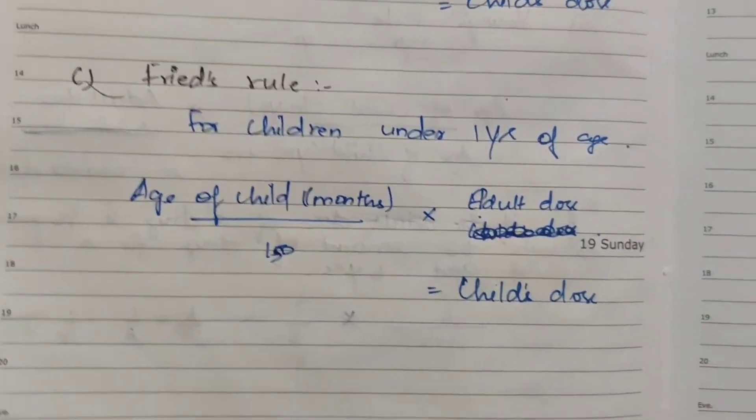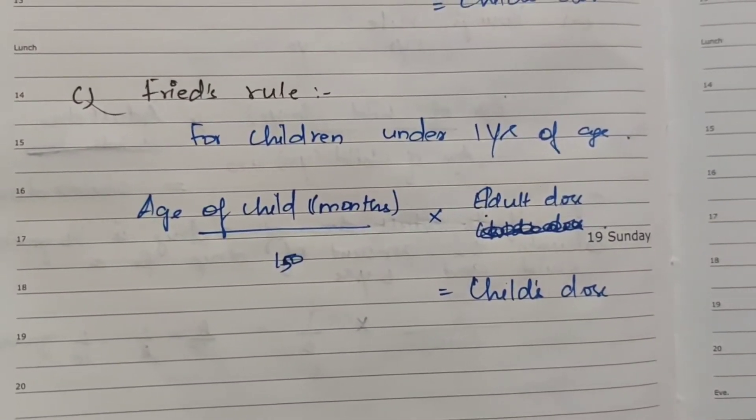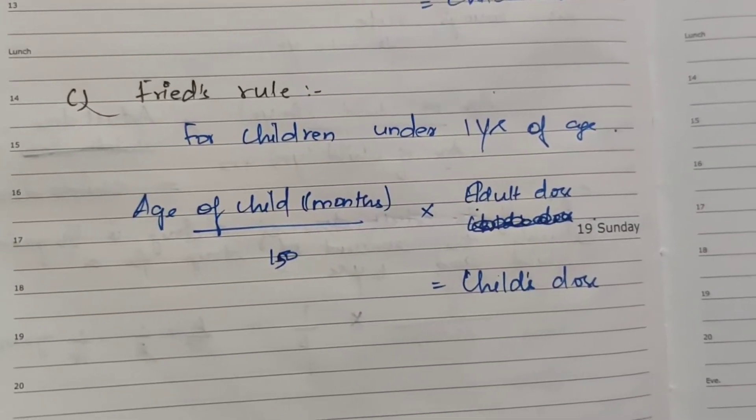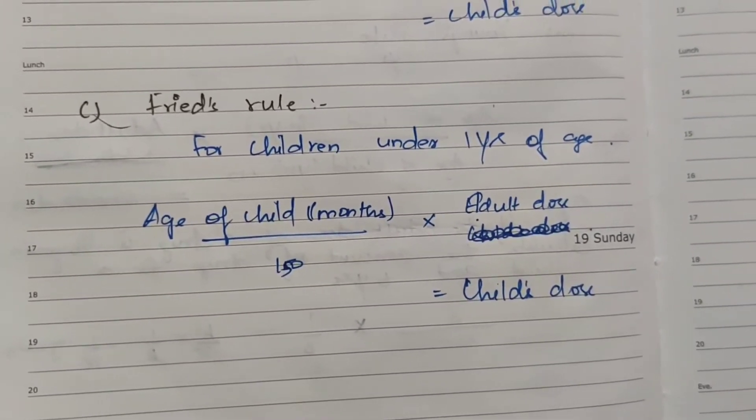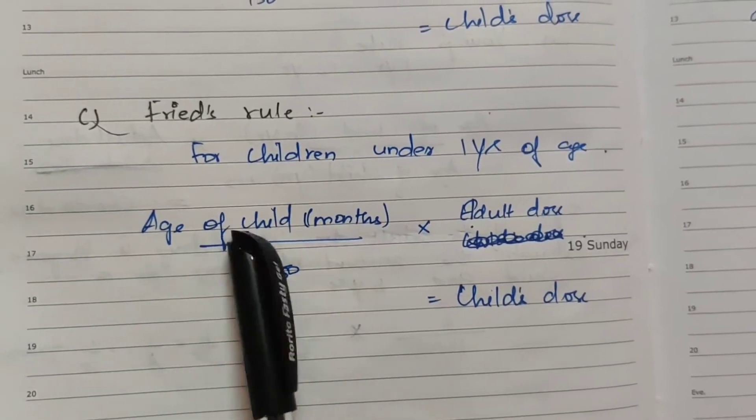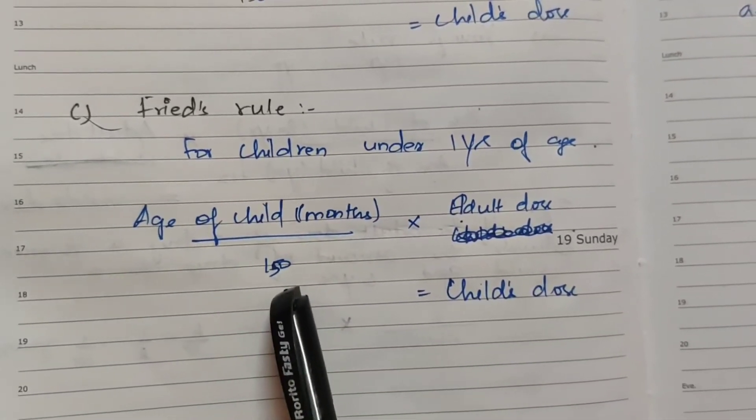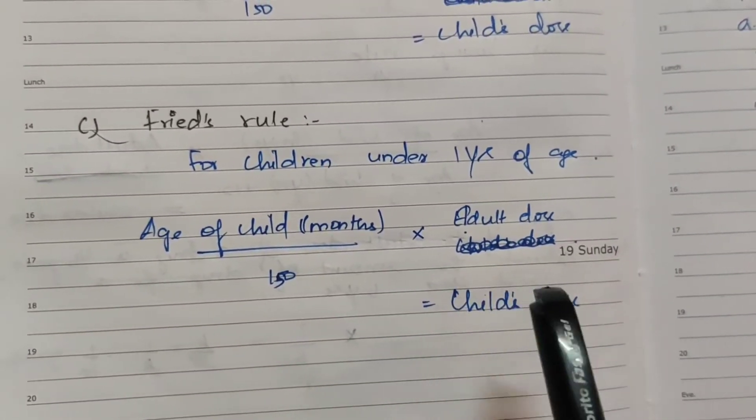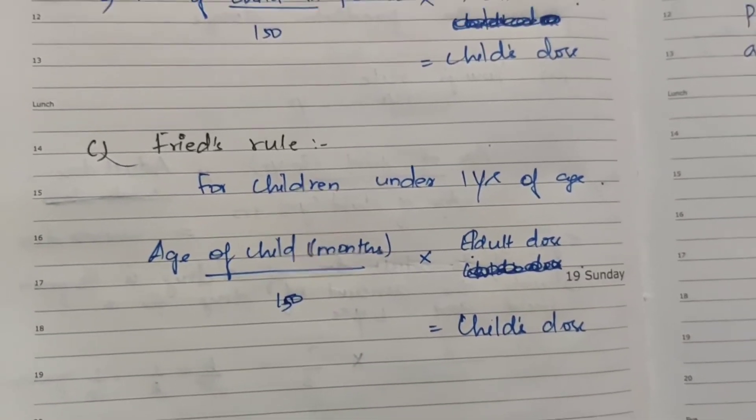Next, Fried's rule for children under one year of age. The formula is: age of child in months divided by 150, multiplied by adult dose, equals child dose. So we need to calculate these three rules.